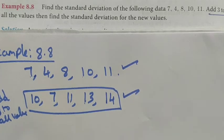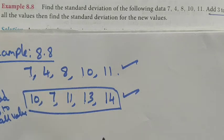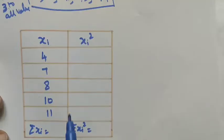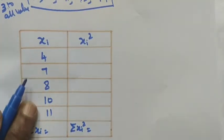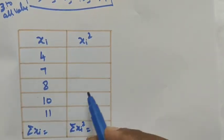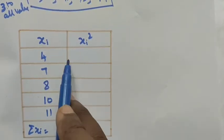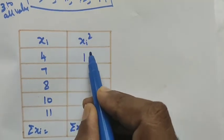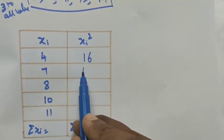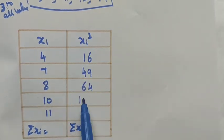First we choose the original data to find the standard deviation. Since the given data values are small, we use the direct method. The given data arranged in ascending order is 4, 7, 8, 10, 11. Using the direct method, we square each term: 4² = 16, 7² = 49, 8² = 64, 10² = 100, 11² = 121.